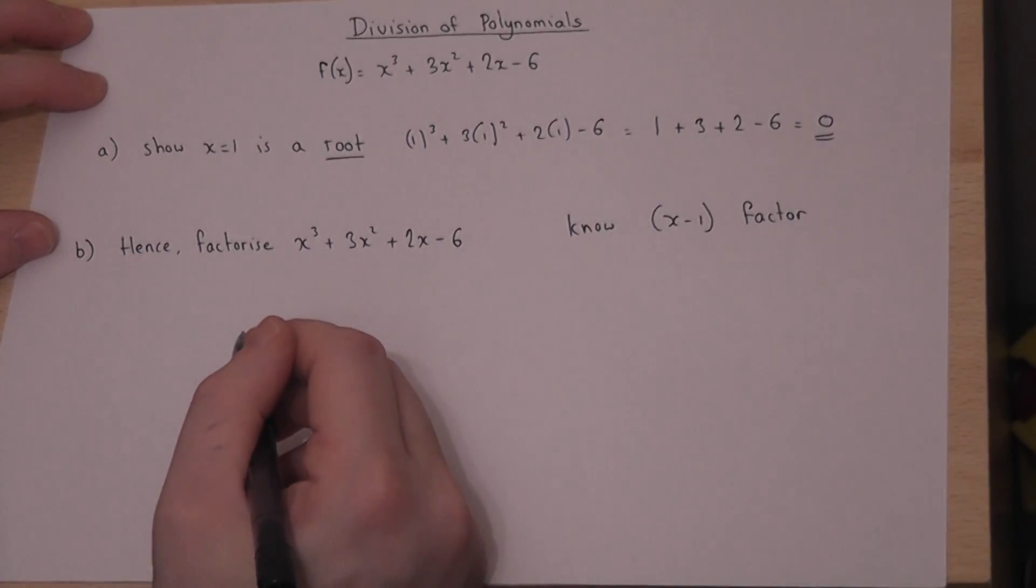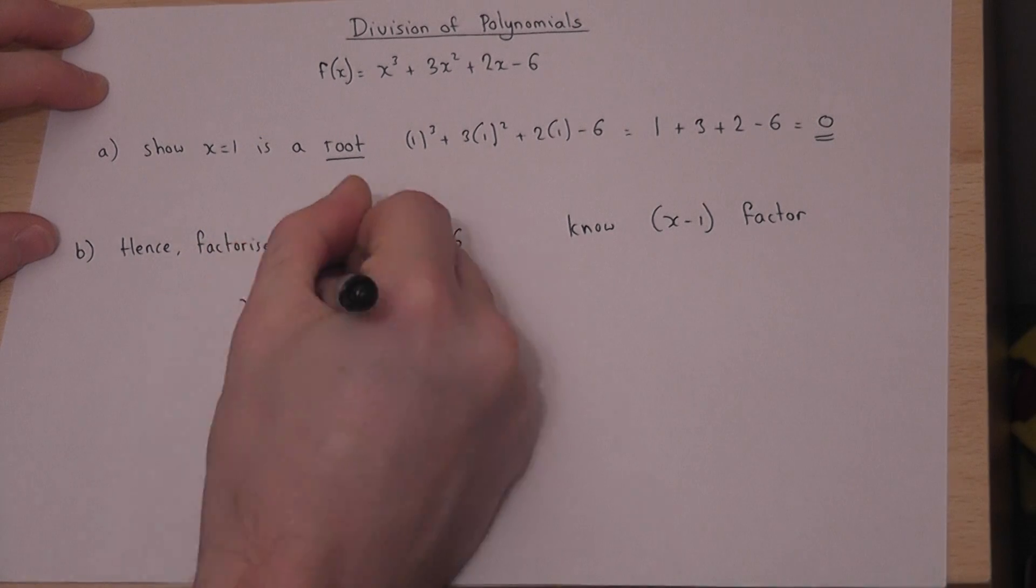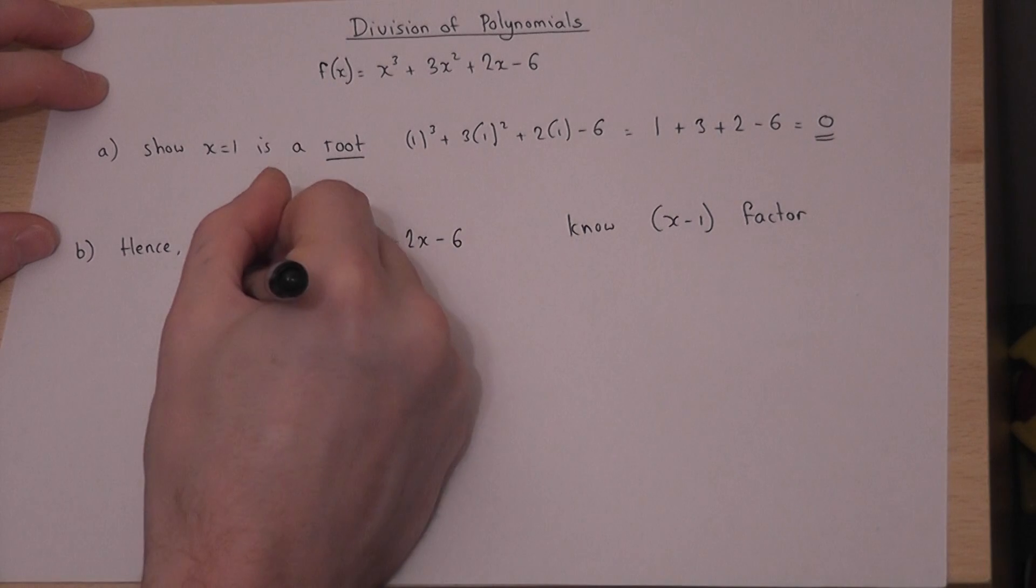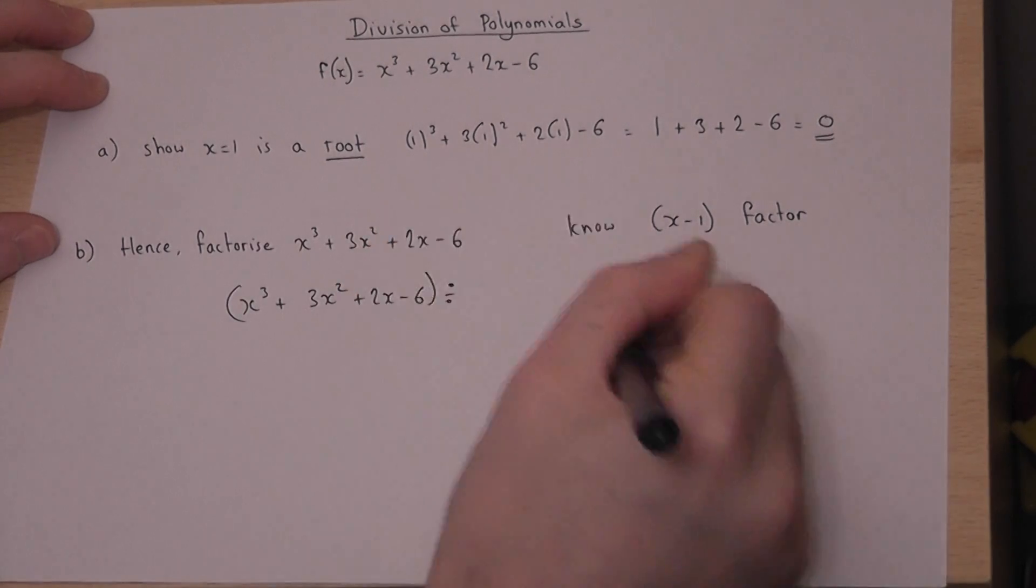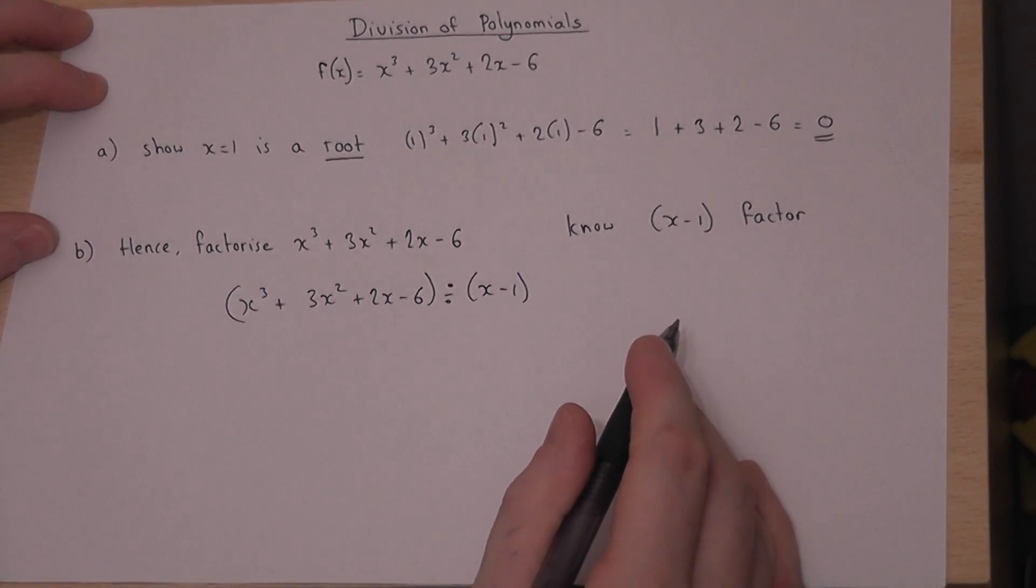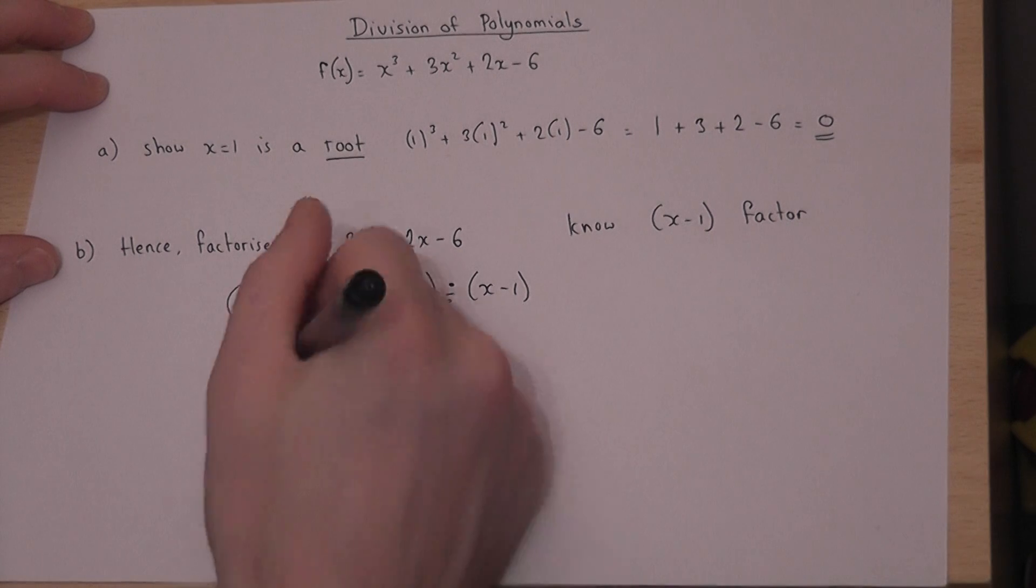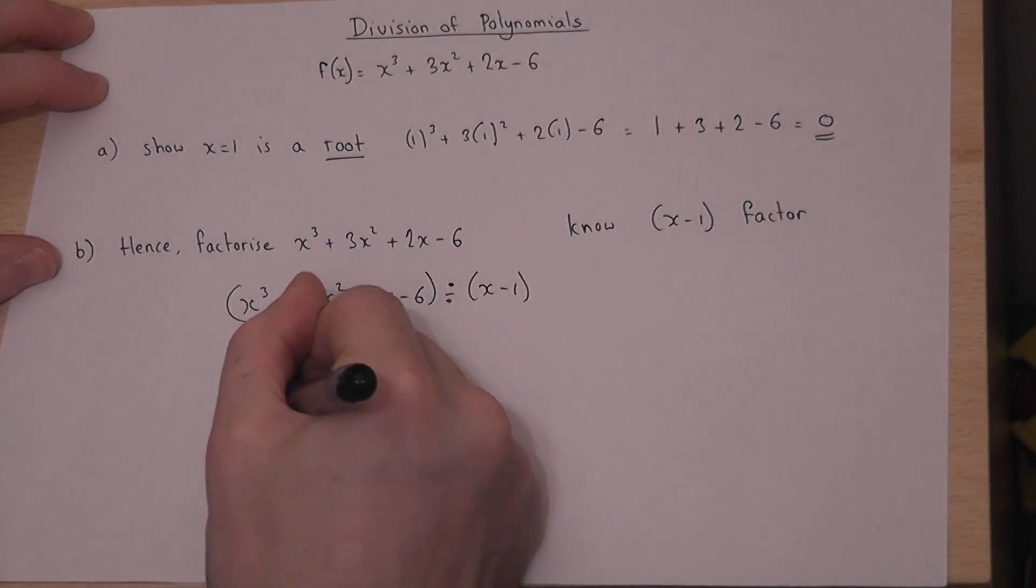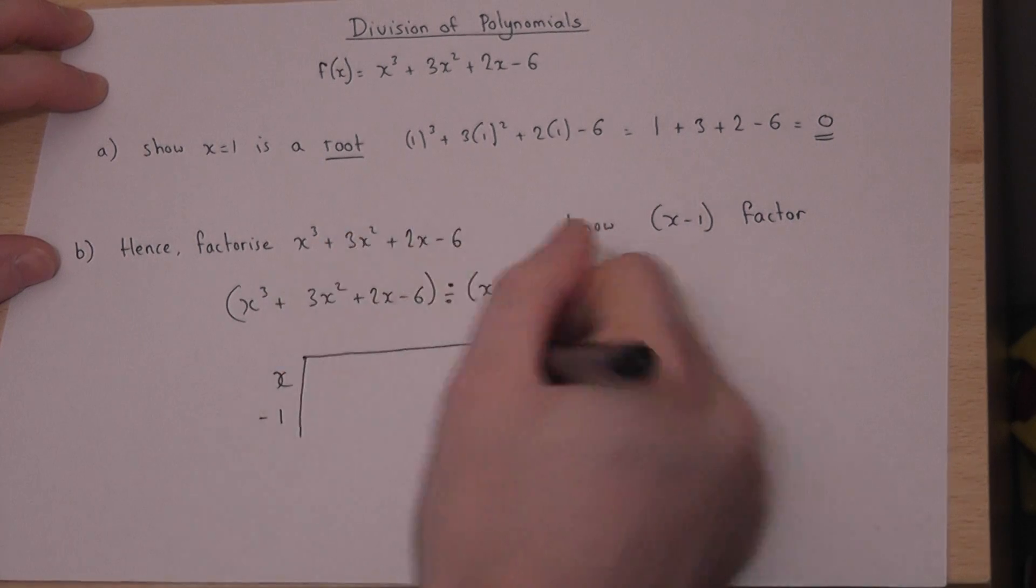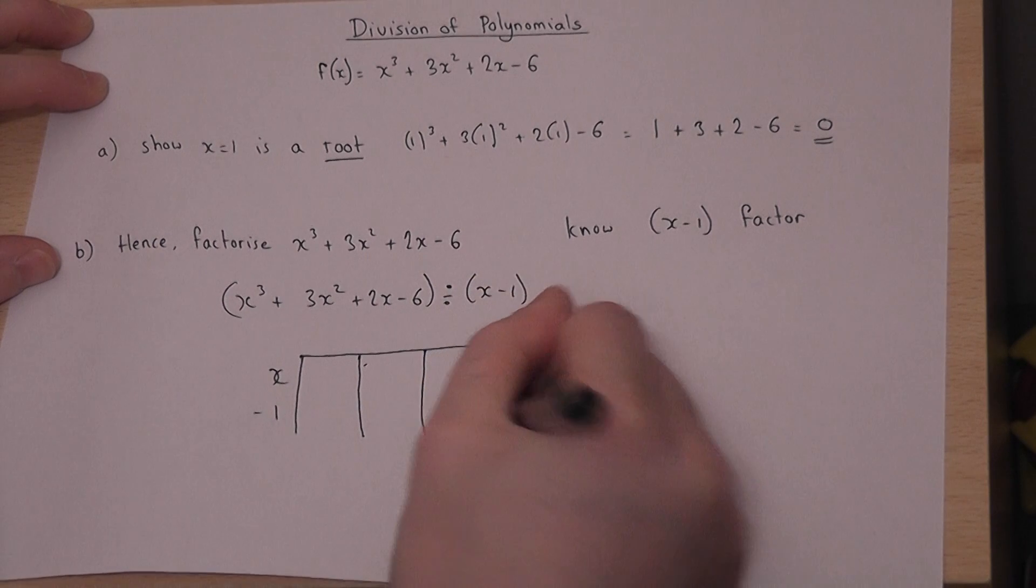So to find the other factors I've got to divide x cubed plus 3x squared plus 2x minus 6 by our known factor. And I do this using my own method, which is probably worth knowing. I do a fairly rough grid and write down the factor I know on the left hand side. I'll just put some columns down. It doesn't matter really.